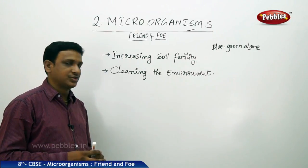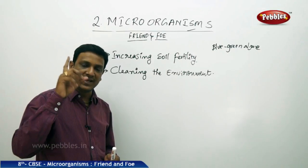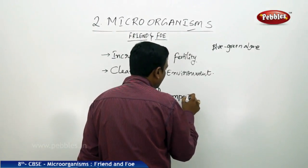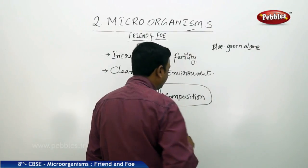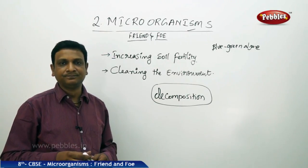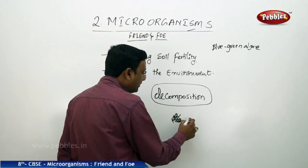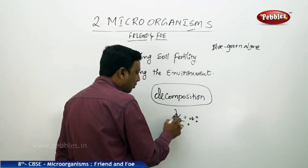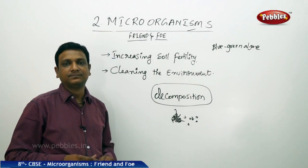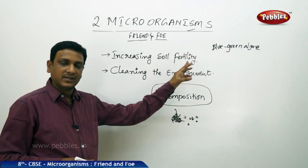Bacteria also decompose dead and decaying matter. In this decomposition process they do two things: they make the soil fertile and they clean the environment. Decomposition means breaking down materials made up of many compounds into individual elements. This decomposition is done by bacteria and other microorganisms, helping in cleaning the environment and increasing the fertility of soil.